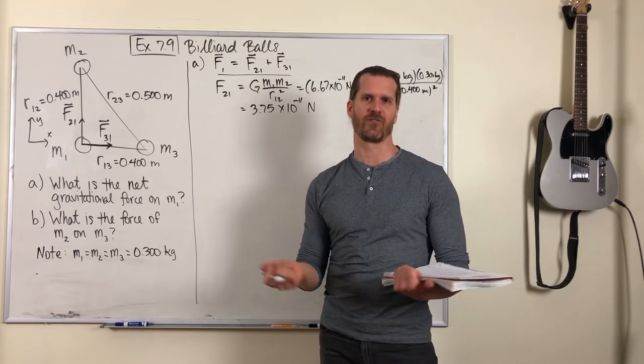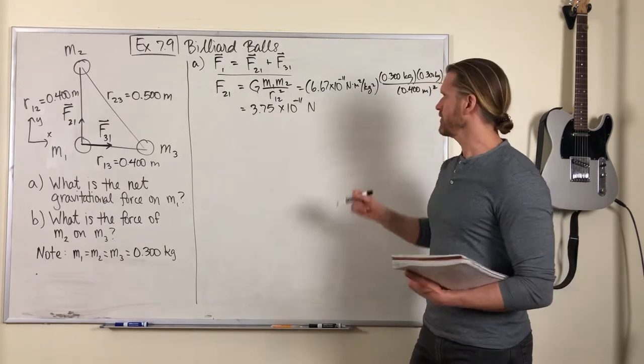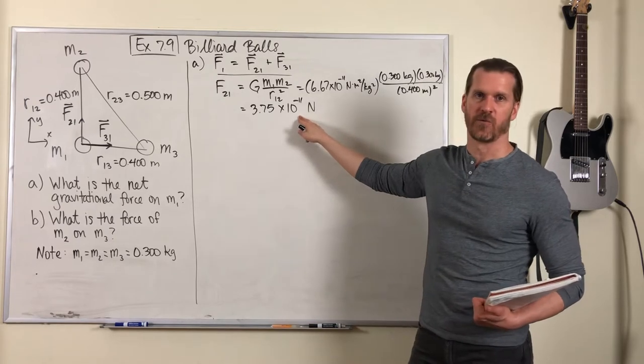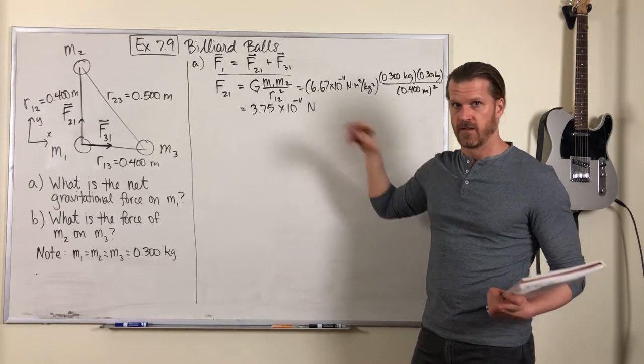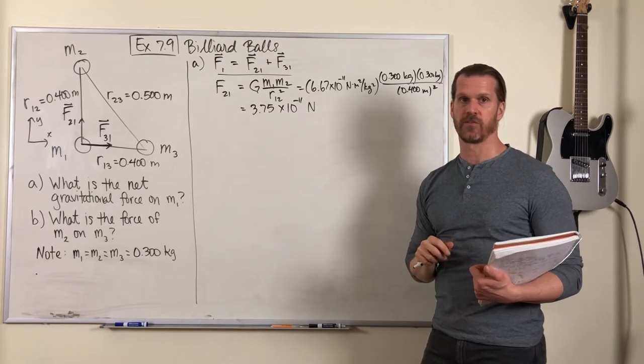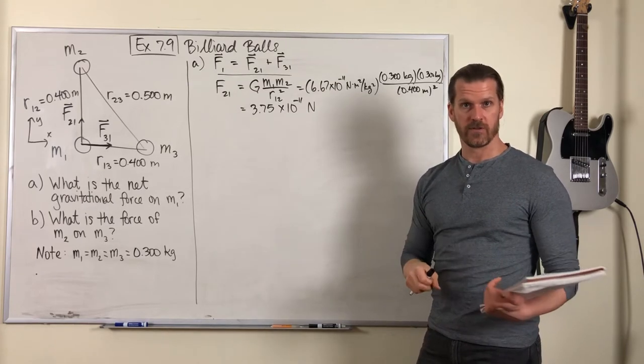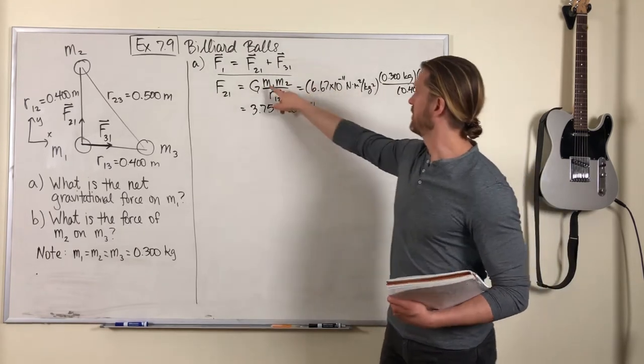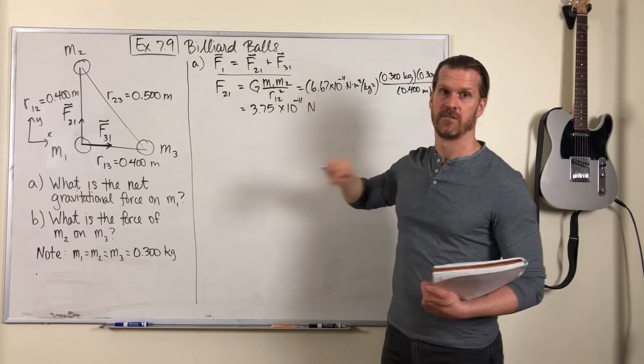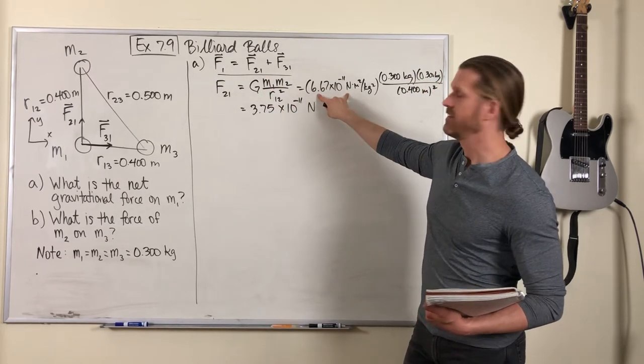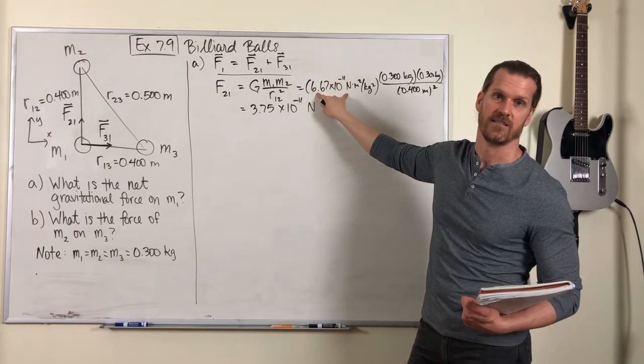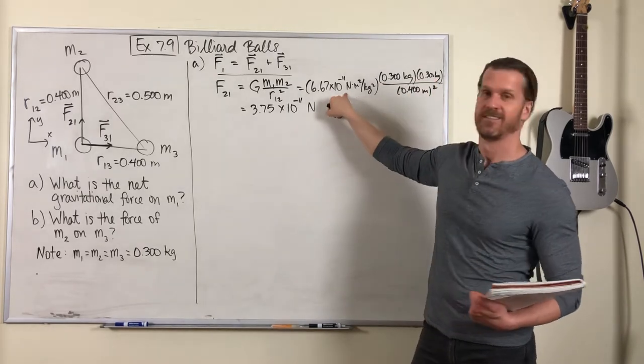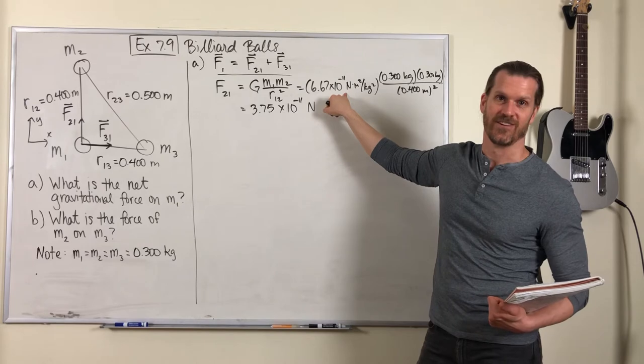So we're seeing now that gravity forces are actually really weak. And the only reason why we notice the gravity force between the Earth and objects in everyday life is because the Earth's mass is so enormous that it can overcome the fact that this G constant is really tiny. But these billiard balls are just 0.3 kilograms and they can't compensate for the smallness of G.